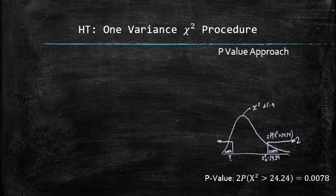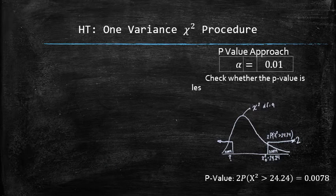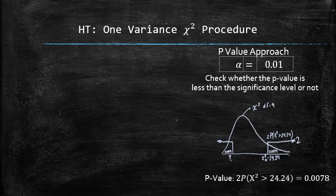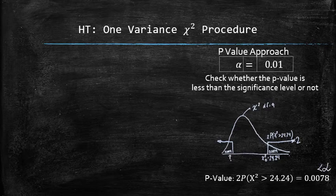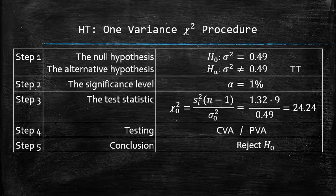In the p-value approach, we must check whether the p-value is less than the significance level or not. Our p-value is 0.0078 and it is less than alpha. Both tests suggest that we do reject the null hypothesis in favor of the alternative.